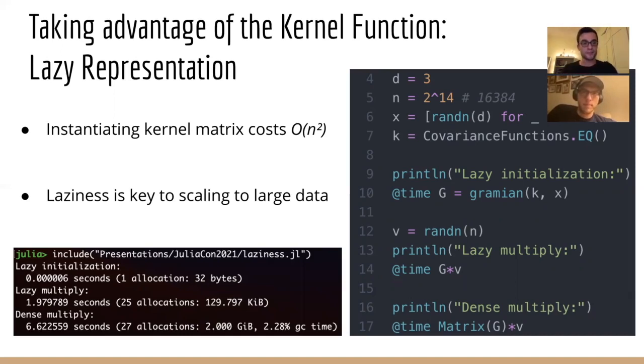On the right, we see a code snippet that initializes 16,000 data points, a covariance kernel function, and a lazy representation of the Gramian kernel matrix. On the bottom, we can see that initialization of G is virtually instantaneous and requires no memory allocation. Further, lazy multiplication only allocates the target vector and is significantly faster than instantiating G densely and subsequently multiplying with a dense matrix.